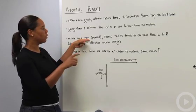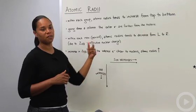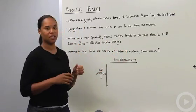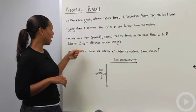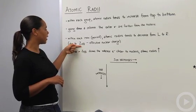So within each row though, or the period, the atomic radius tends to decrease from left to right. So as you go from the left to the right, your atomic radius tends to go down.